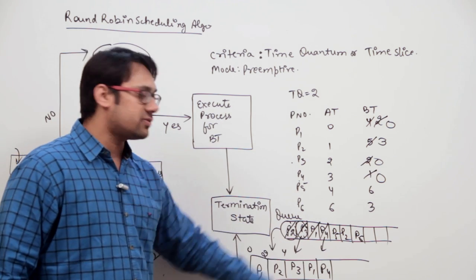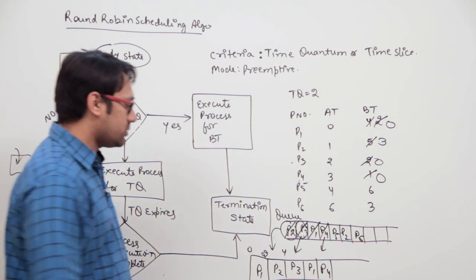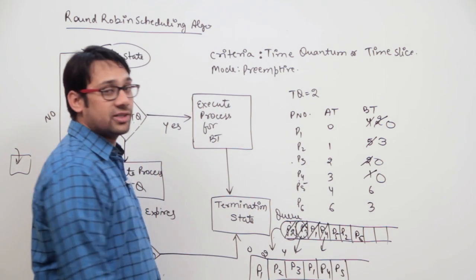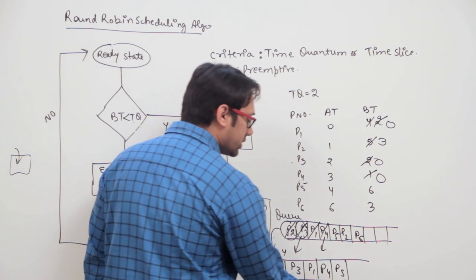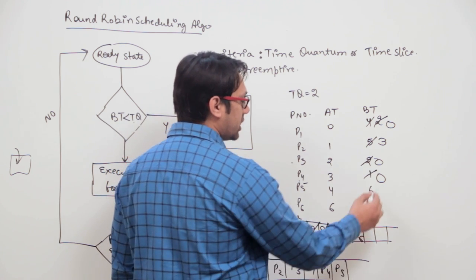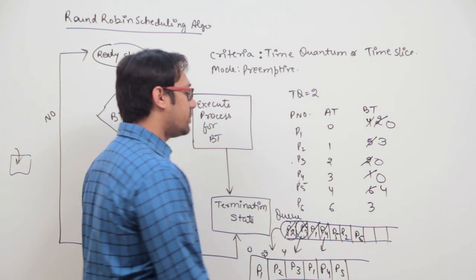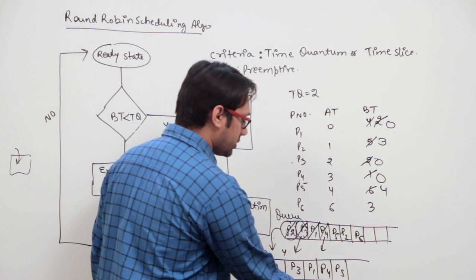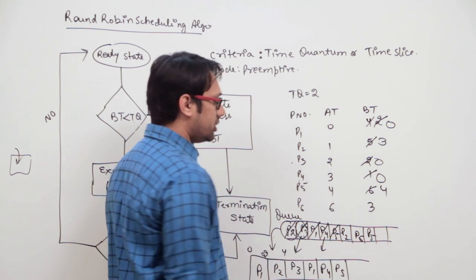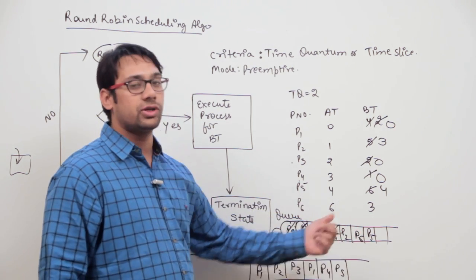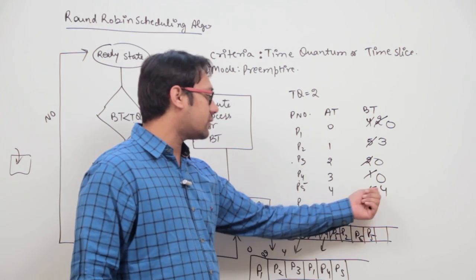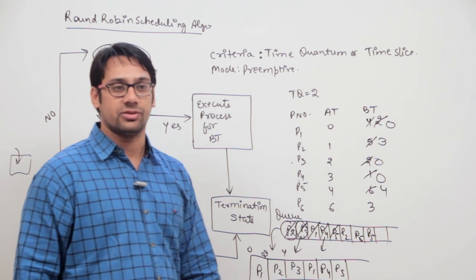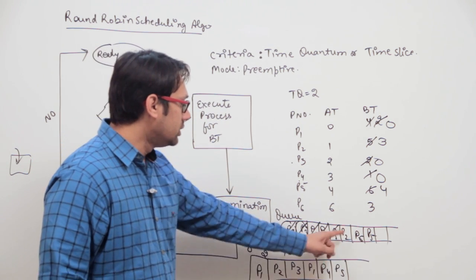The next process is P5. The burst time of P5 is 6, which is not less than the time quantum, so we execute it for 2 units until time unit 11, and its burst time becomes 4. Since P5 is not finished, we put it back in the ready queue.